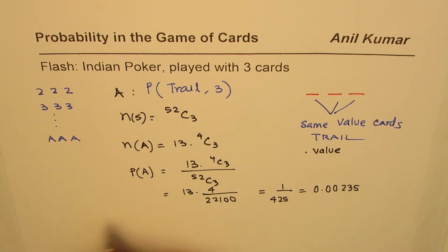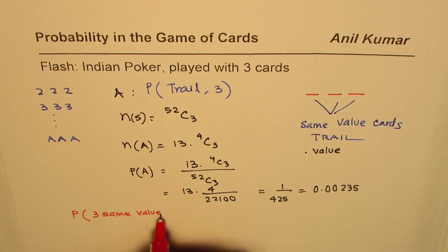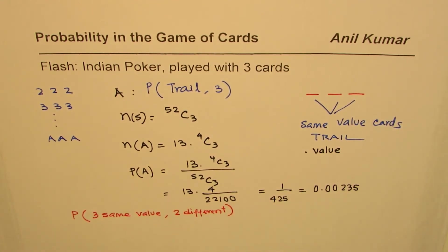As an exercise, you can try to find probability of getting a card which is three of same kind and two different. That is in the game of poker where we are distributing five cards, so we have three of same value and two different. You can extend this question and try to evaluate probability in the game of poker where five cards are being distributed where three are of the same value.